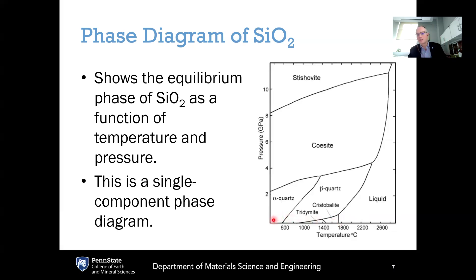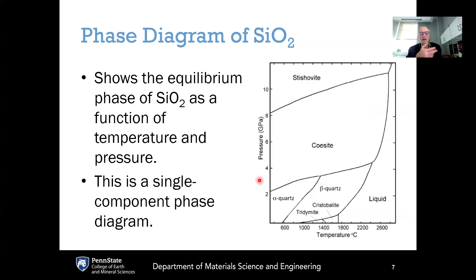For most glass manufacturing, we don't care about the high-pressure side of this phase diagram because most glass manufacturing is done at the Earth's surface under atmospheric pressure — pressure isn't a variable in glass manufacturing. The high-pressure part of this phase diagram is more useful in geosciences, where high pressures occur deeper in the Earth. So for this single-component phase diagram, we mostly care about the temperature axis.